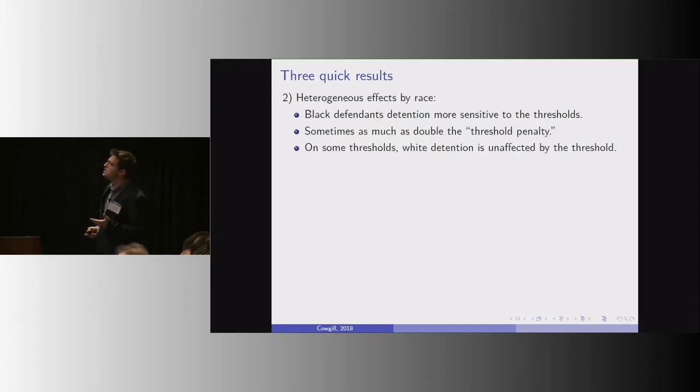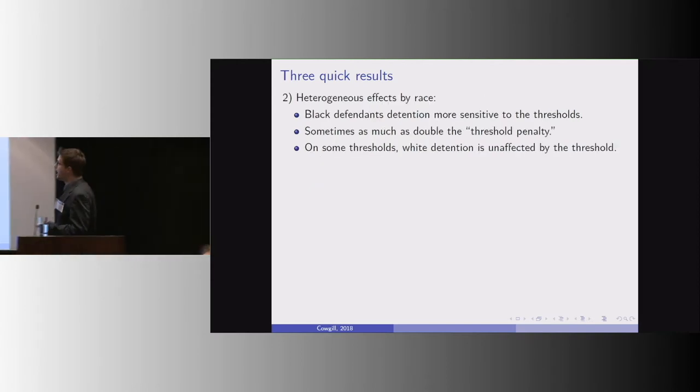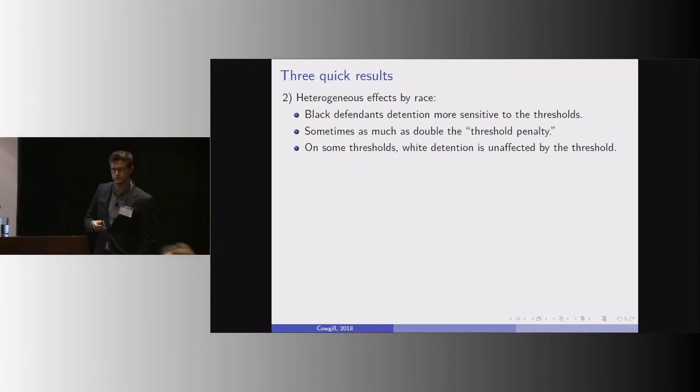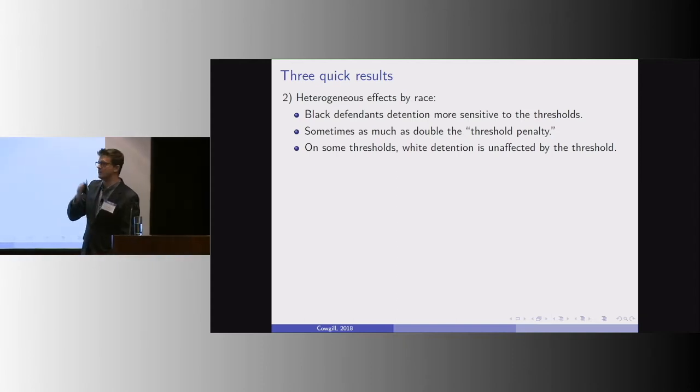Second, there are heterogeneous effects to crossing these thresholds by race. So black defendants' detention is way more sensitive to these thresholds or these labels than whites, even though the label is essentially random around a window around the window of the cutoff.